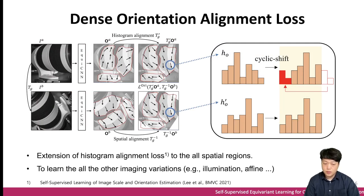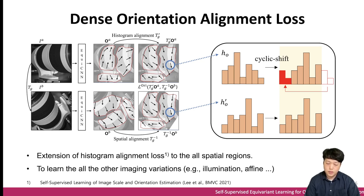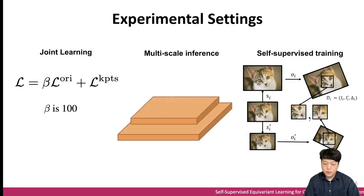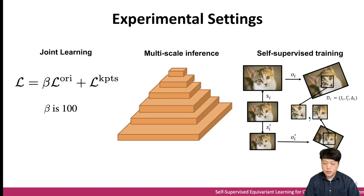The dense alignment loss aligns the histogram map at the G group dimension and the spatial regions at the HW dimensions. The feature-level alignment in the group dimension utilizes the cyclic property of rotation, so the histogram cyclically shifts the locations in one of the images. After aligning spatially and at the feature-level, we compute a point-level cross-entropy loss to align the distribution. For the experiment, we train our network jointly with the orientation loss and the key point loss. For scale robustness, we conduct multiscale inference using an image pyramid. To reduce annotation cost, we train our network in a self-supervised manner by generating synthetic image pairs with geometric transformation and photometric augmentation.